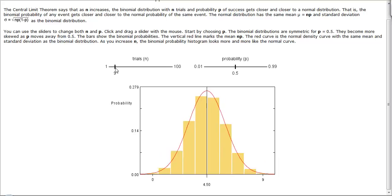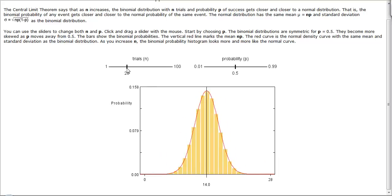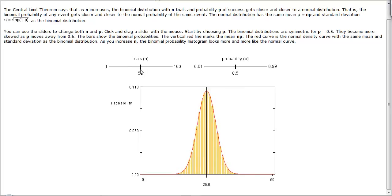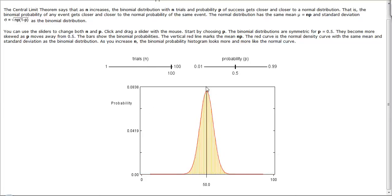If we increase this number of trials up to 50, we can see the histogram and the normal density taking on relatively the same shape. If we increase it up to 100, they're almost on top of each other perfectly.